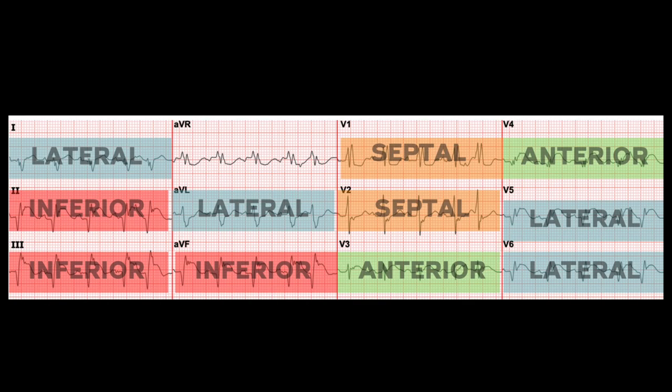So let's say that you have an EKG where there is ST elevation in leads 1 and V2. Those aren't contiguous leads, so you wouldn't be able to call it a STEMI. That doesn't tell you anything.